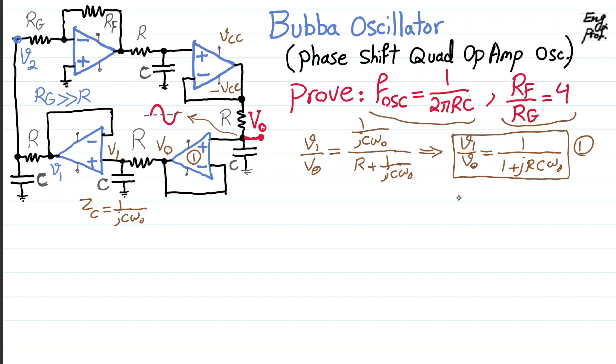So for V2 versus V1, we can write exactly the same thing as we saw here for V1 and V_out. So V2 over V1, repeat, 1 over 1 plus jRCω naught. That's equation number two.